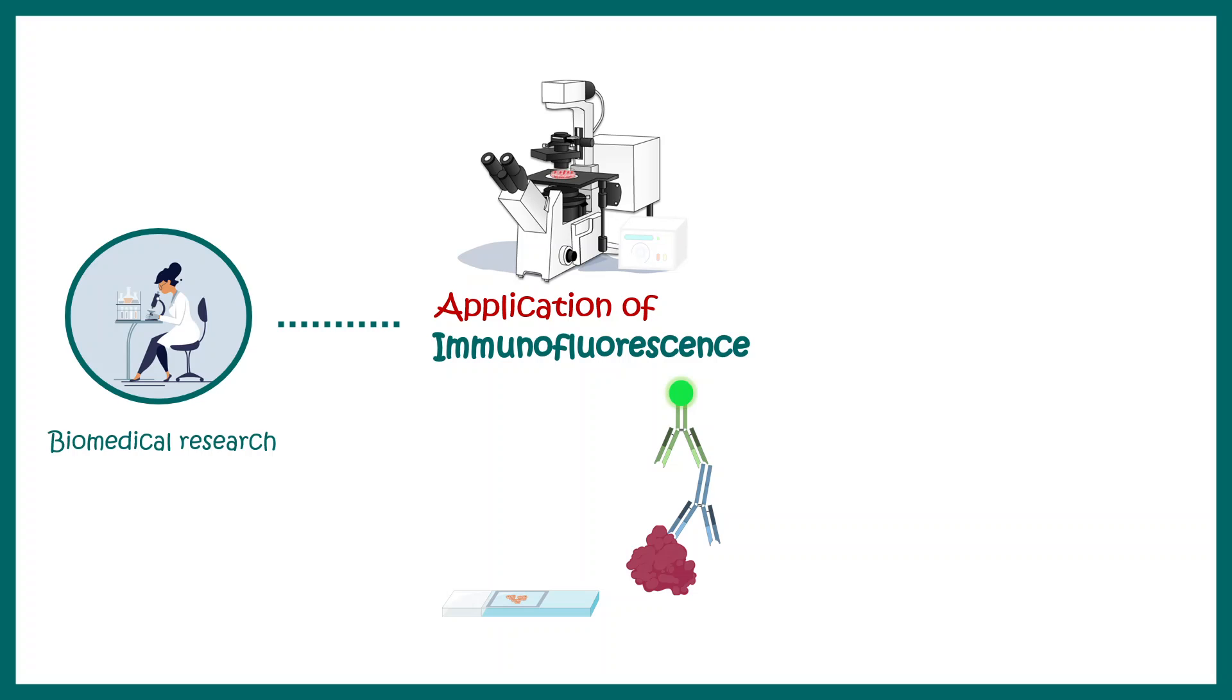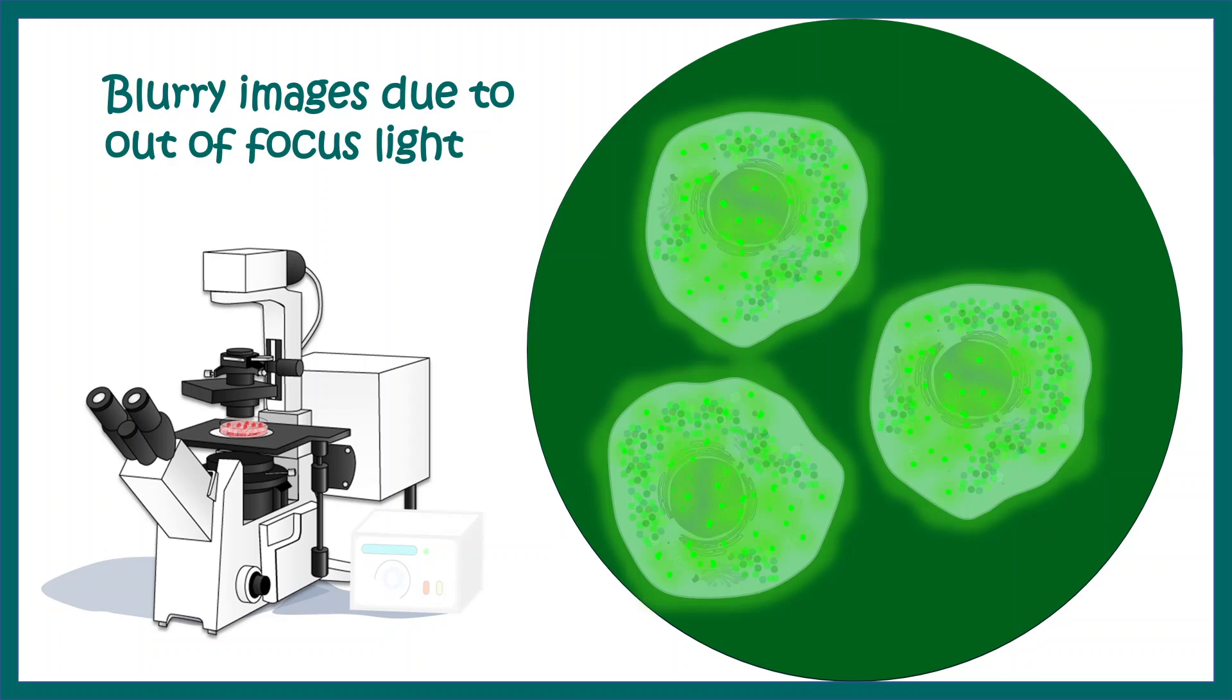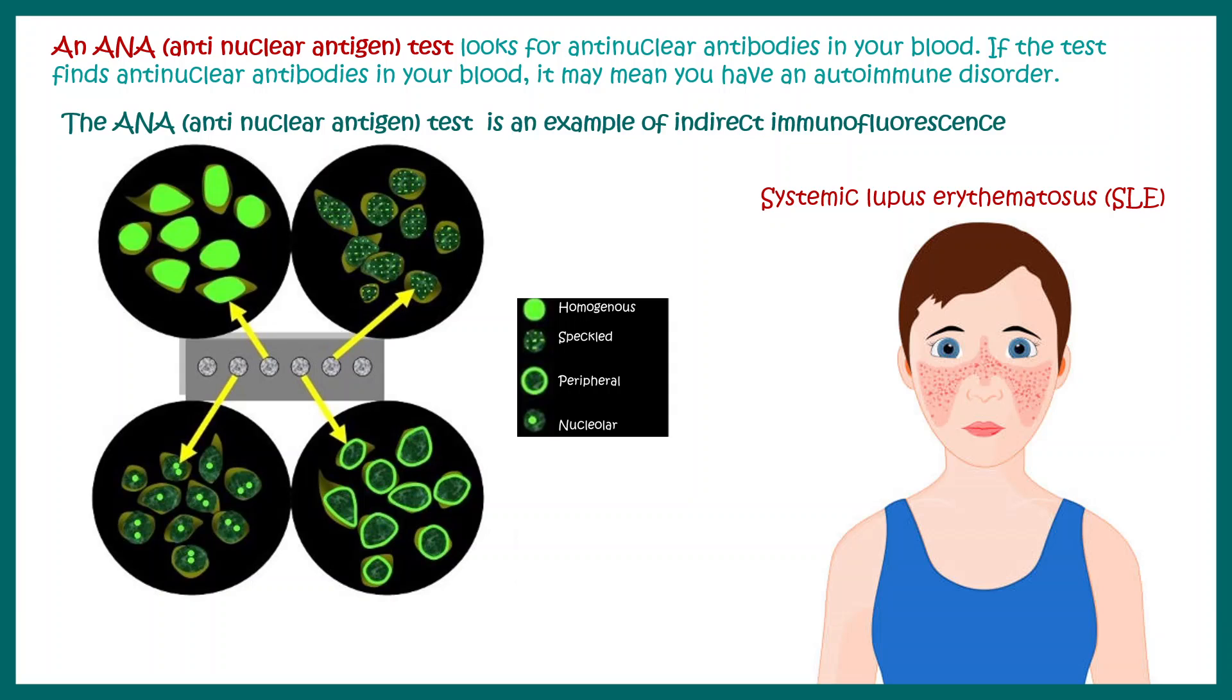In biomedical research and clinical applications, we can use immunofluorescence. Let me tell you that even if blurry images are produced in fluorescence microscopy, still this technique is invaluable for clinical research. Techniques like anti-nuclear antigen test or ANA test, which is done to detect presence of autoantibodies or to confirm whether a patient has an autoimmune disorder, requires the technique of indirect immunofluorescence. Here, specific fluorescence patterns allow the pathologist to understand whether anti-nuclear antibodies are present or not.